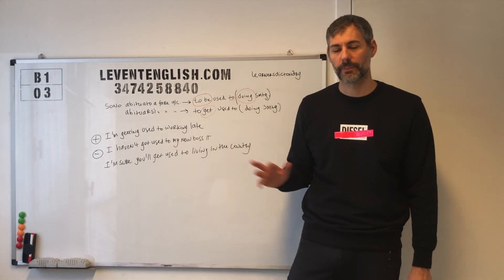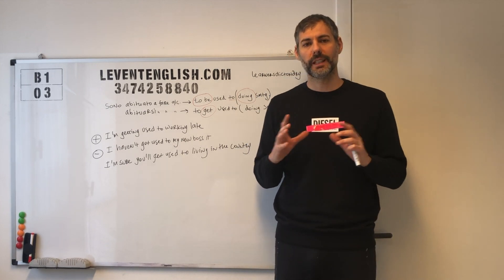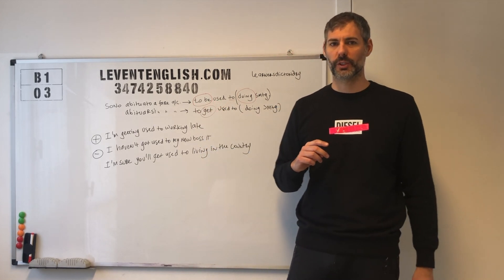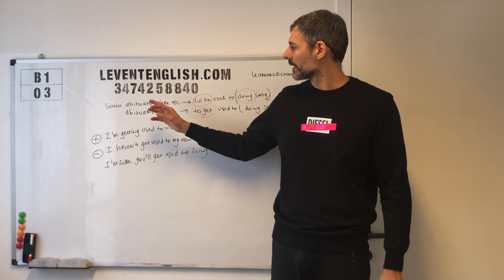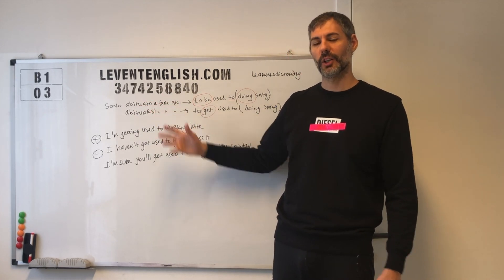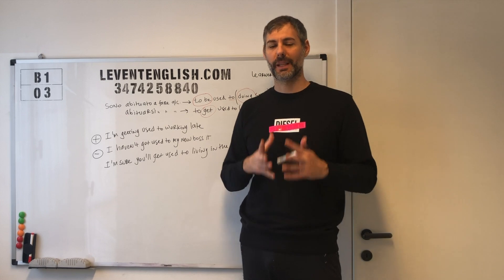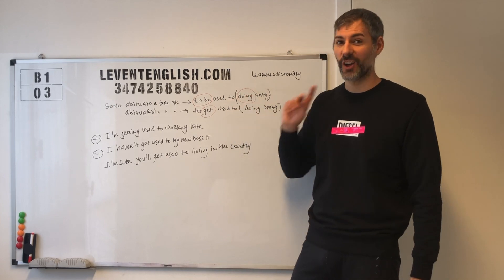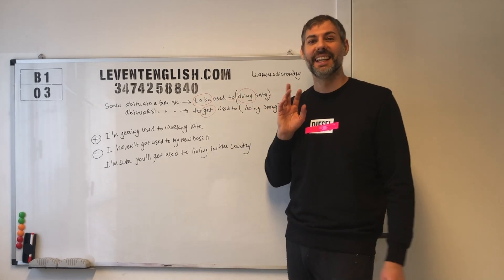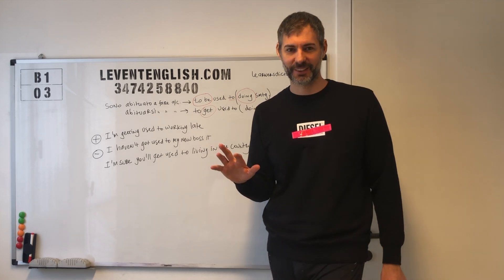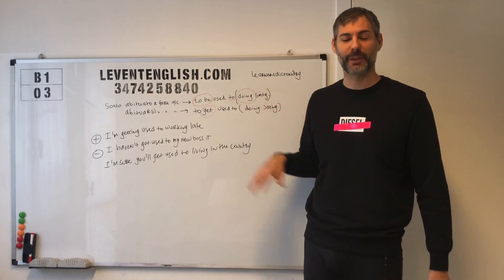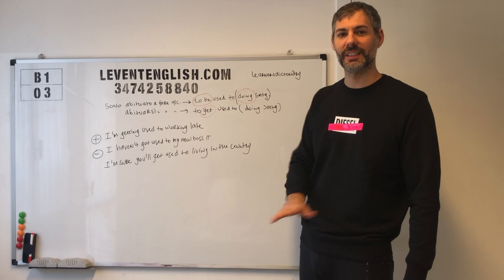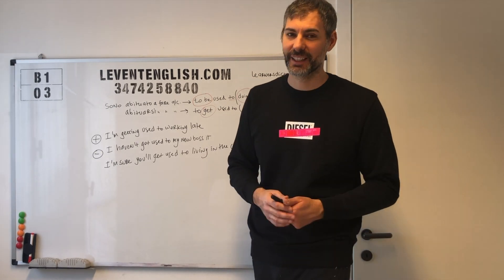Cosa abbiamo imparato oggi? Abbiamo imparato a costruire due piccole strutture che ruotano intorno a used. Solo che oggi abbiamo imparato che si può tradurre essere abituato a fare qualcosa per parlare di un'abitudine presente. E lo si fa con to be, used to, più ing. Occhio a questa ing qua, perché è maledetta. E tantissimi miei studenti se la dimenticano. Non si può farne a meno per correttezza grammaticale.